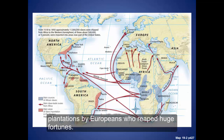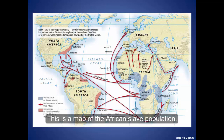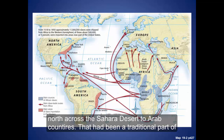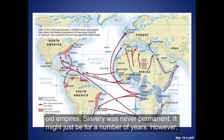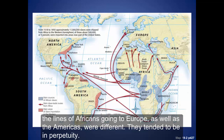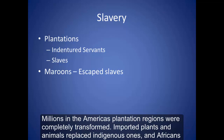Millions of Africans were transported to the Americas and enslaved on plantations by Europeans who reaped huge fortunes. Some slaves were taken north across the Sahara Desert to Arab countries — that had been a traditional part of old empires. In that context, slavery was never permanent; it might just be for a number of years. However, the lines of Africans going to Europe as well as the Americas were different — they tended to be in perpetuity. Very few would be set free, and millions in the Americas plantation regions were completely transformed.